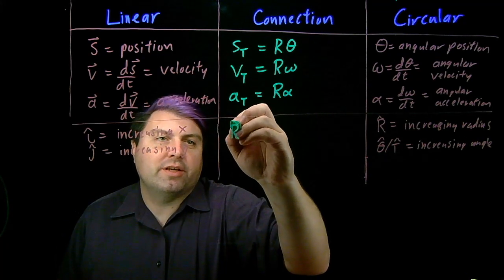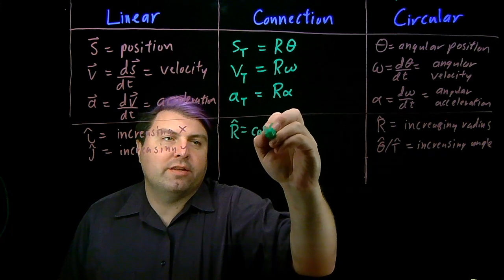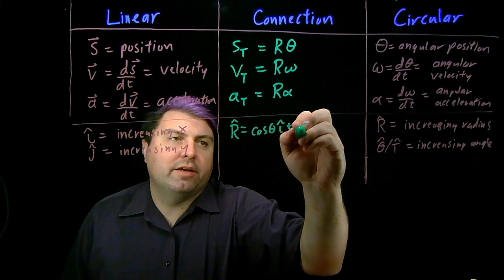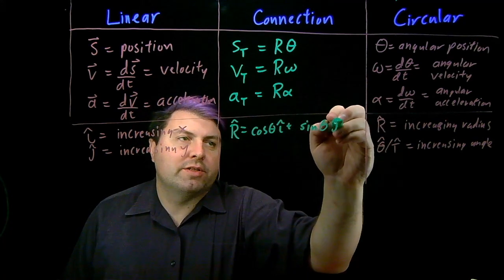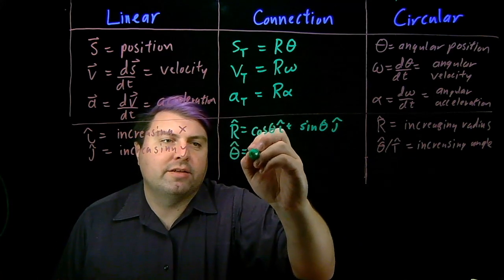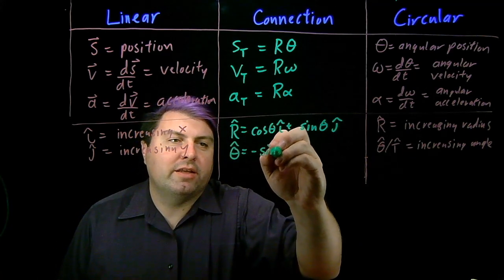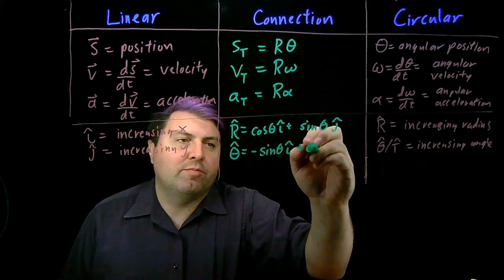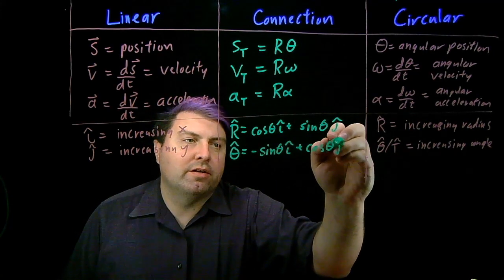We have a little bit of a hairy relationship between these, but our relationship is that r hat is equal to cosine theta i hat plus sine theta j hat, and we have that theta hat is negative sine theta i hat plus cosine theta j hat.